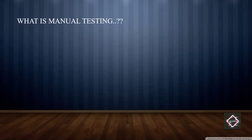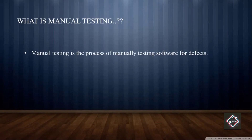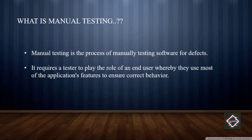Let's start with the definition: manual testing is a process of manually testing software products. It requires a tester with the role of an end user, where the user tests most of the application features to ensure correct behavior. The primary objective is to ensure the program is completely error-free or bug-free so that the application works extremely well when used by customers or clients.